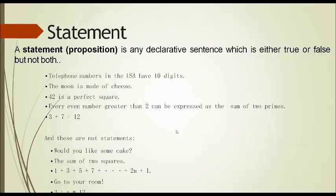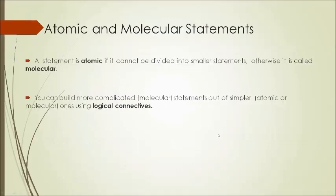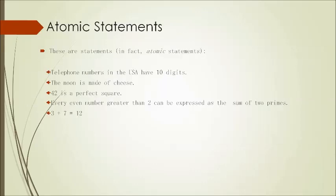A statement is atomic if it cannot be divided into smaller statements; otherwise it is called molecular. You can build more complicated statements out of simpler ones using logical connectives. Examples of atomic statements include: telephone numbers in the USA have 10 digits, the moon is made of cheese, and 42 is a perfect square.